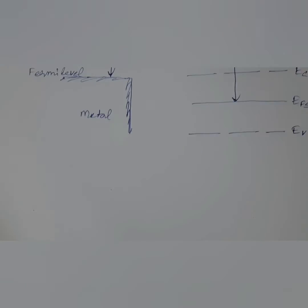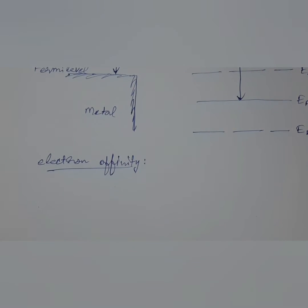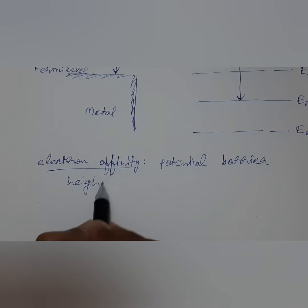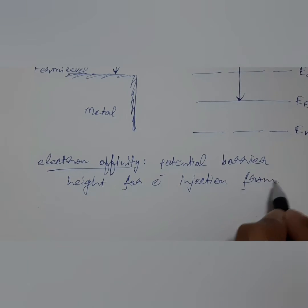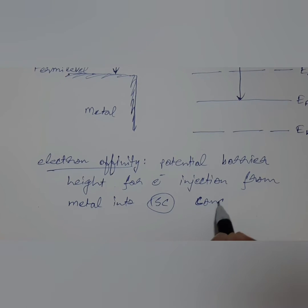Now moving on to electron affinity. Again we shall first have a look at the textbook definition, which is: electron affinity is the potential barrier height for the electron injection from metal into the semiconductor conduction band, and this is given by phi m minus xi.